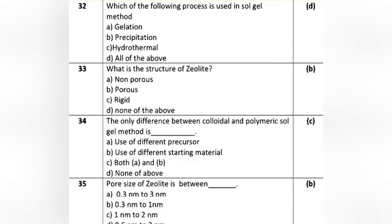Question 9: What is the structure of zeolite? Option A: non-porous. Option B: porous. Option C: rigid. Option D: none of the above. The correct answer is Option B: porous.